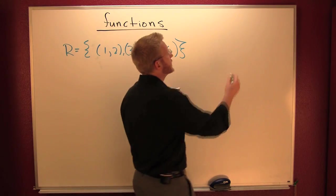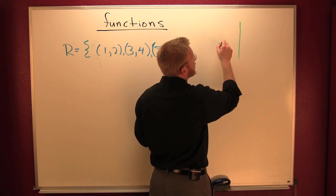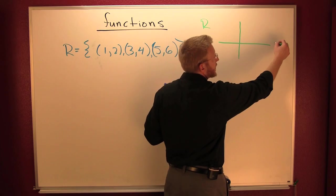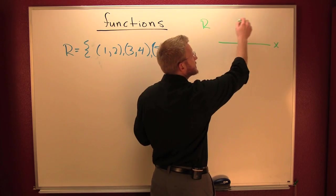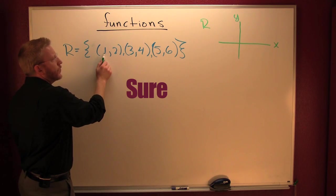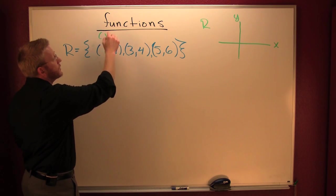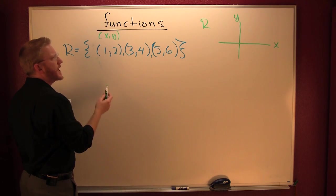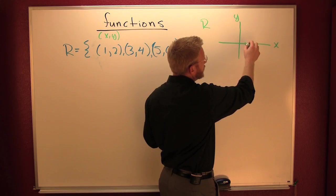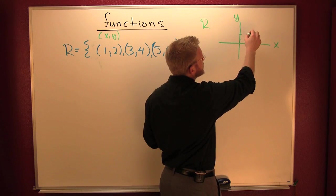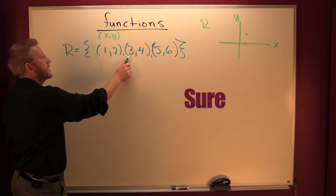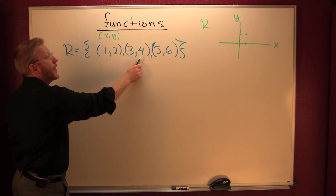Let's map it — plot those points. This is my function, or my relation, R. It has first elements — x's — and second elements — y's. These are in the form x comma y, our standard points. When x is one, y is two, and that's my first dot.